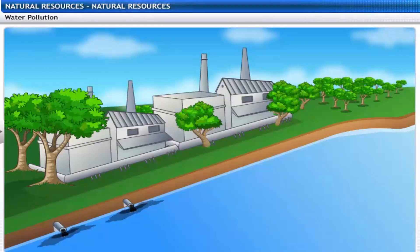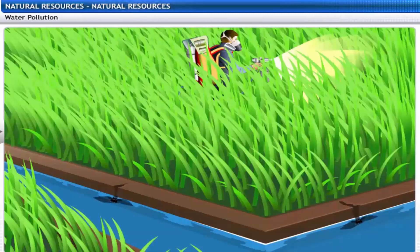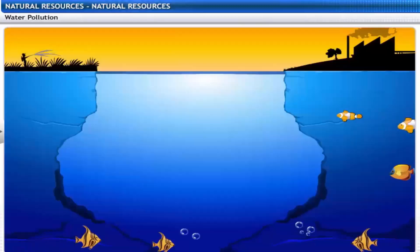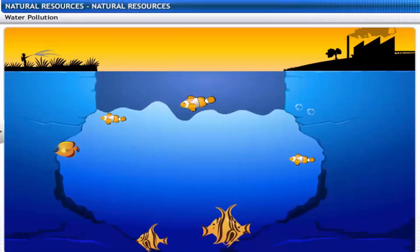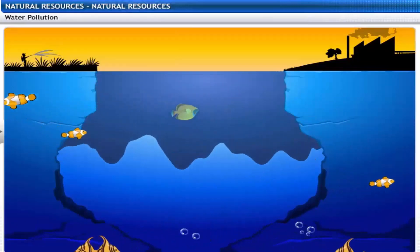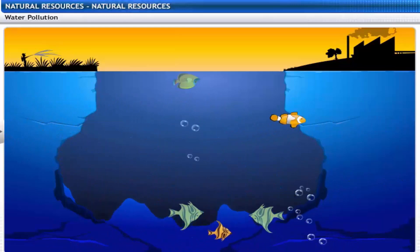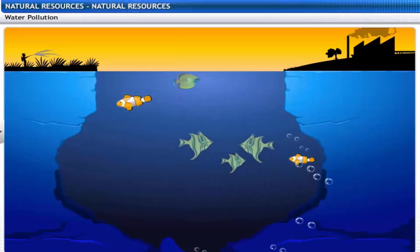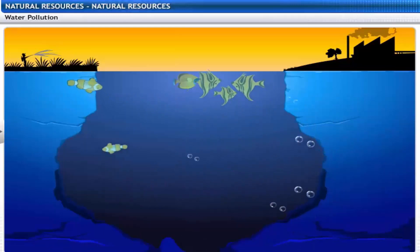Industrial chemicals and urban sewage are dumped into rivers and lakes. Fertilizers and pesticides used in farms dissolve in water. Dissolved oxygen is needed by aquatic animals. A rise in the water temperature removes the dissolved oxygen and causes the death of many aquatic animals.